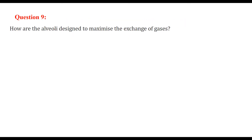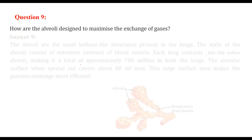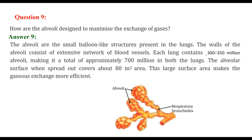How are the alveoli designed to maximize the exchange of gases? Alveoli are small balloon-like structures present in our lungs. The walls of the alveoli consist of an extensive network of blood vessels. One lung contains around 350 million alveoli, and both lungs together have around 700 million alveoli.